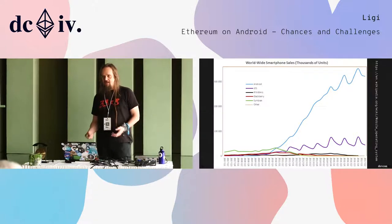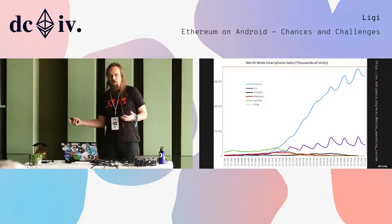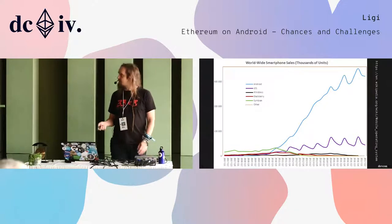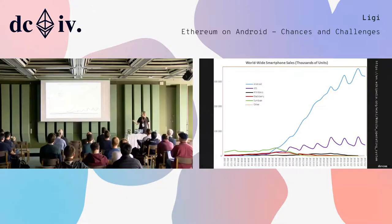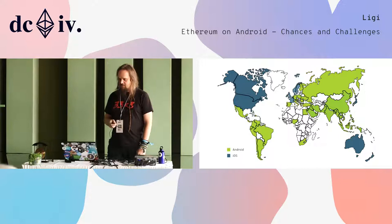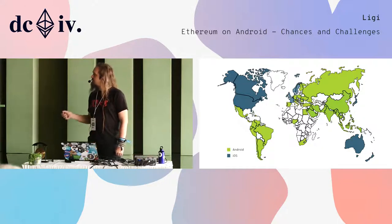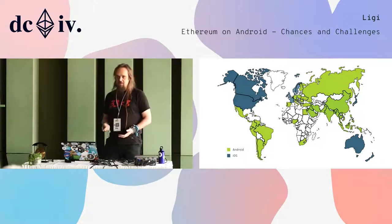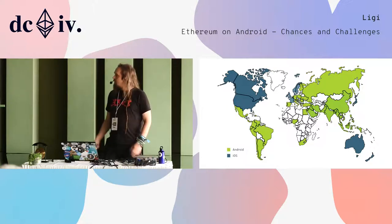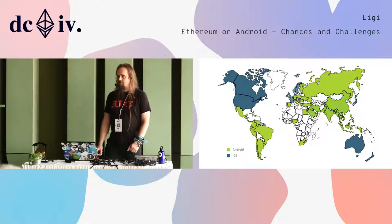The first thing is quite obvious: there are now a lot of Android devices out there. These are basically the sales curves of Android, and you see it's just rising, while the rest — which is not open platforms — is basically fading out. The growth is mainly because you can get Android very cheaply in the emerging world.